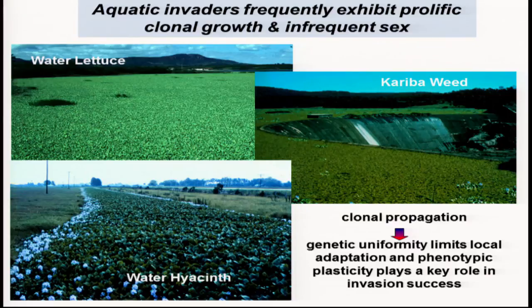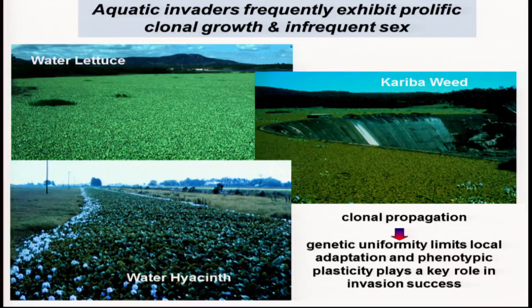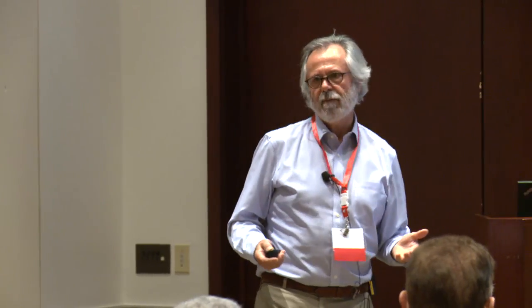This is water lettuce — a very serious invasive aquatic. And this is kariba weed, which is particularly interesting because it's a fern, not a flowering plant. There is no sex in this species because it's a sterile pentaploid hybrid. It may be the largest organism on Earth because this one clone occurs throughout the Old World, from Australia right through to Africa. These species manage without genetic variability through phenotypic plasticity — the ability of a genotype to produce different phenotypes in different environments — which is very well developed in many of these clonal aquatics.